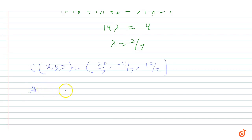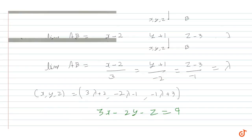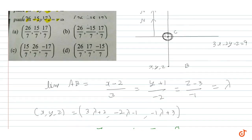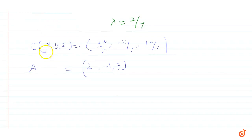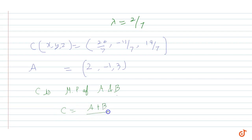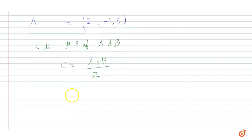Point A is given as (2, -1, 3). Since C is the midpoint of A and B (the reflection), we use the midpoint formula: C = (A + B)/2, which gives B = 2C - A.